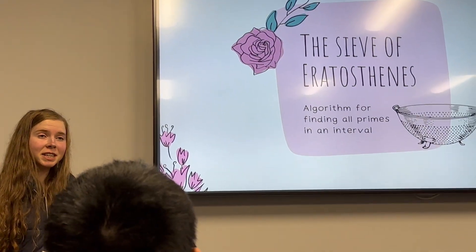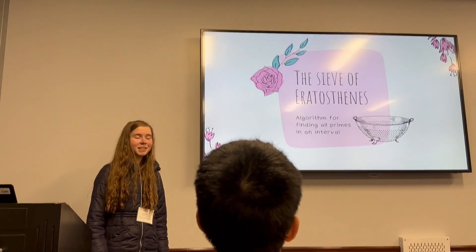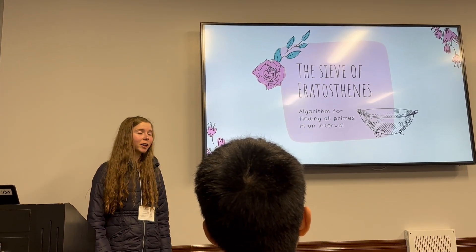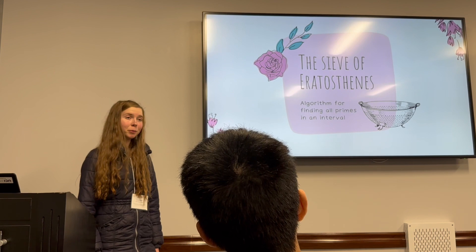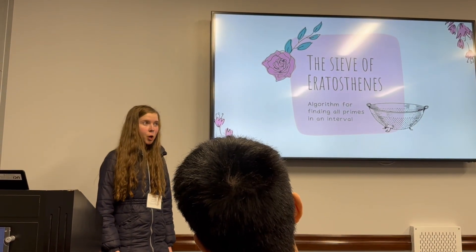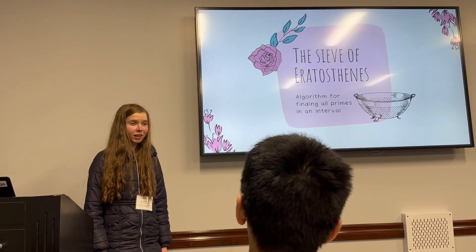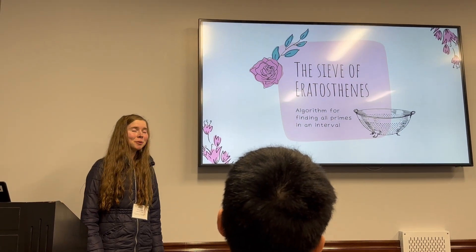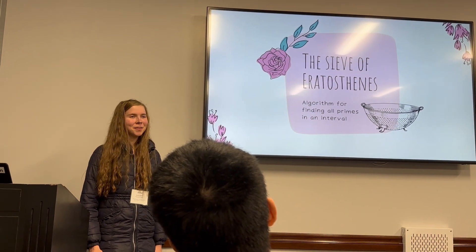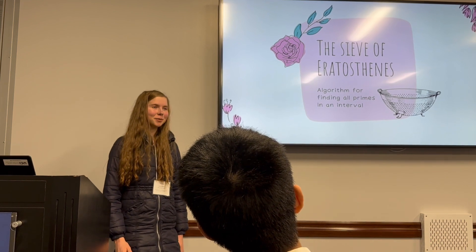That's why a mathematician named Eratosthenes designed a process to help us identify primes. Using the Sieve of Eratosthenes, we can find all the primes in an interval beginning with 1 and ending with some positive integer. We could use it to find all the primes between 1 and 100, or even 1 and a million. But given time constraints, I'll be showing you how it works for the interval beginning with 1 and ending with 30.